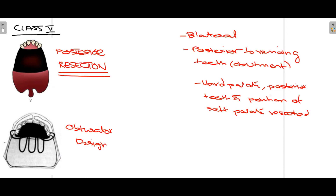Class 5 is when the entire posterior region of the maxilla is resected. Some anterior teeth are remaining, but the entire posterior region has been resected bilaterally. Some abutment teeth are present anteriorly. In this case, the hard palate is resected, posterior teeth are resected, and some part of the soft palate is also resected. When designing the obturator, support is taken from these remaining teeth and the small anterior portion of the hard palate that remains, and an obturator is designed to close the defect.